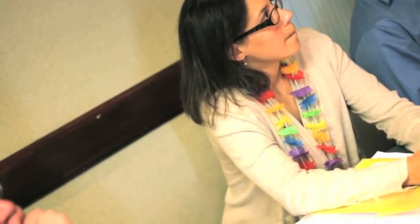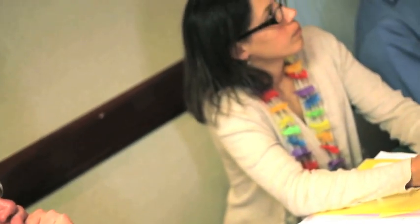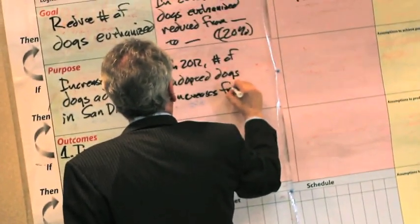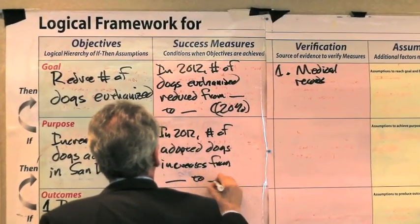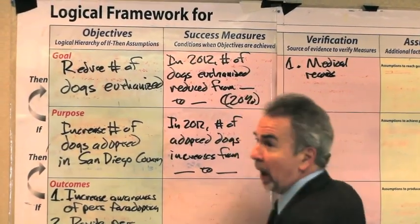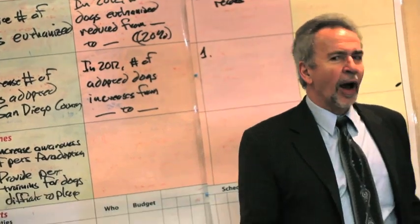Increased number of dogs adopted in San Diego County — that's pretty similar as well: that in 2012, the number of adopted dogs increased from X to Y. Verification of that would be adoption records.